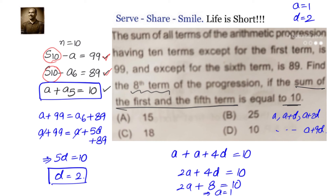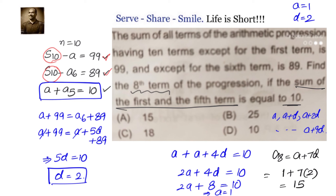So we know a = 1 and d = 2. Now it is easy to find a8. a8 equals a plus 7d, which is 1 plus 7 into 2, that is 1 plus 14, which equals 15. So the correct option is the first option, that is 15.